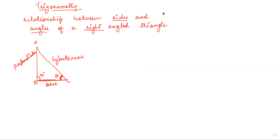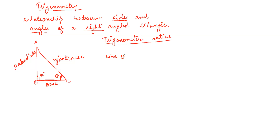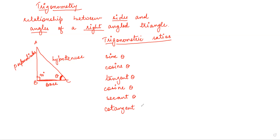Now the first thing we will be studying about are called trigonometric ratios. So note down all these things, then we will revise them again. There are many trigonometric ratios: one is called sine theta, then there is cosine theta, then tangent theta, then cosecant theta, then secant theta, and cotangent.